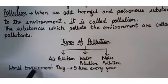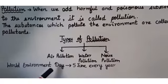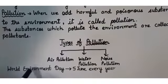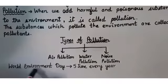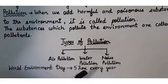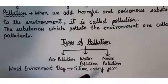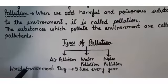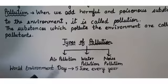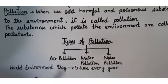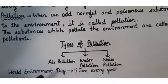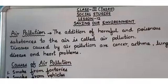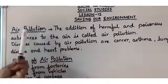One important thing — the World Environment Day. When do we celebrate World Environment Day? We celebrate World Environment Day on 5th June every year. On that day, we must celebrate it by planting a tree. Now, out of the three types of pollution, the first one is air pollution.